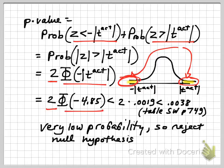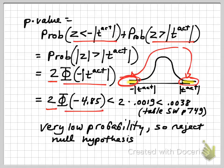If we look that up on page 749 in Stock and Watson, the cumulative standard normal distribution only gives probabilities up to values of about 2.99. But we can see it's going to be less than 2 × 0.0019, which is the probability of finding something lower than −2.9. Multiplying by 2 gives 0.0038 — well under 1%. A t-statistic of 4.85 has very low probability, so we reject the null hypothesis.